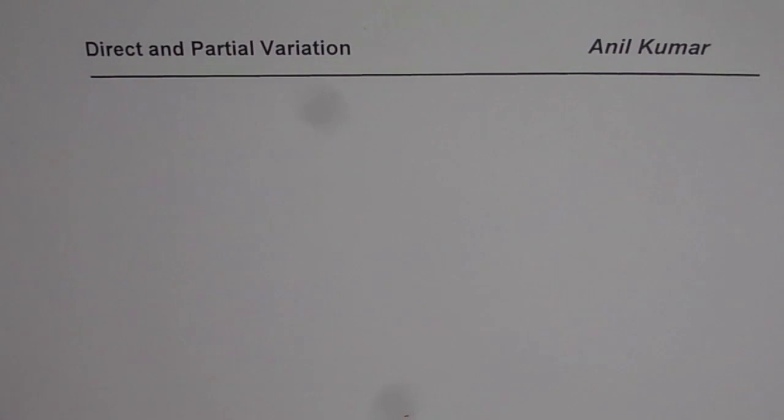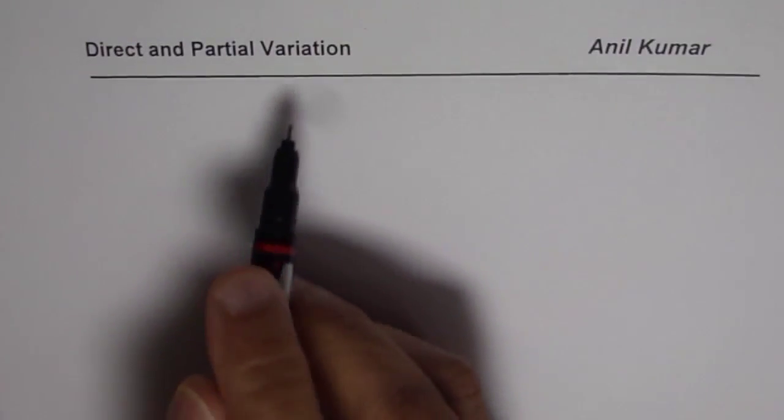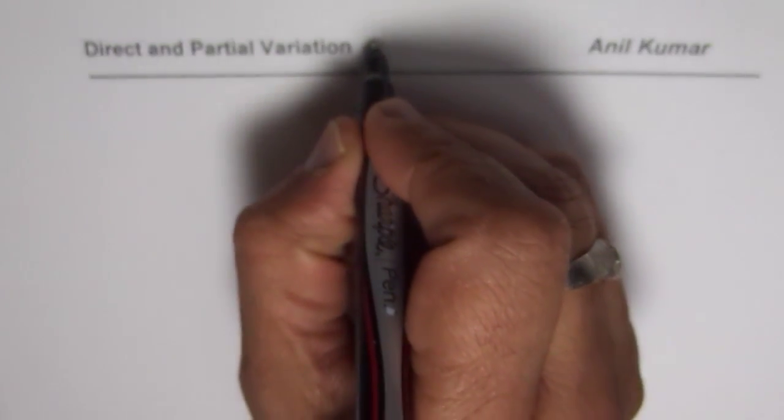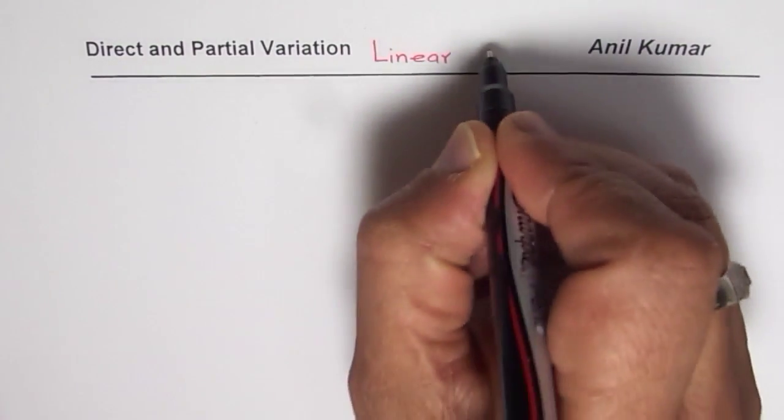I am Anil Kumar and in this video we will summarize our learnings about direct and partial variations. Whenever we talk about direct and partial variation, remember we are talking about linear relation. So that is a must. It has to be a linear relation.